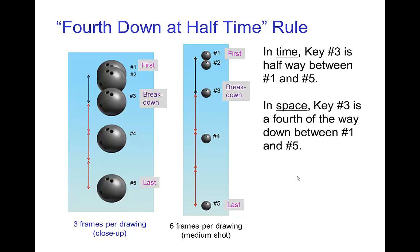For pose to pose, a useful principle is what I call "fourth down at half time." This name perhaps makes more sense if you know American football. The idea is that when you have a slowing out or slowing in, such as with falling motion, the breakdown which is halfway in time between the apex and the last key is a fourth of the way from the apex.